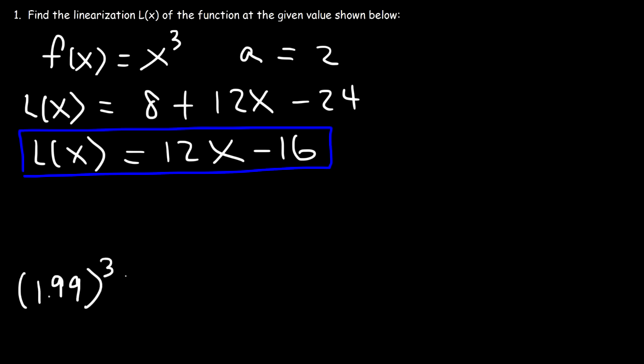Without a calculator, this would not be fun. Now, let's use a calculator. So 1.99 to the third power, if you type that in, it's 7.880599. That is the exact answer. But we can approximate this value using the linearization function at this particular number.